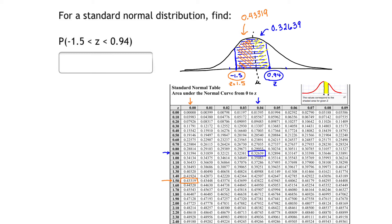To get the total area between -1.5 and 0.94, we take the sum of those two values. We will take 0.43319 and add that to 0.32639.